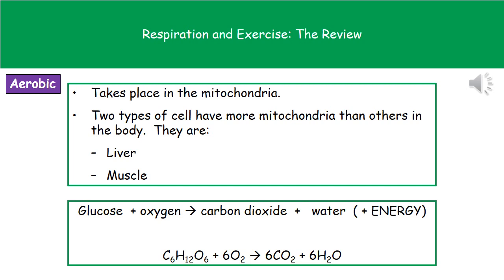Your word equation for aerobic respiration is: glucose plus oxygen makes carbon dioxide plus water. The reason that the plus energy goes into brackets is because energy isn't actually a chemical, so technically we shouldn't include it in the word equation. If you were asked to write the balanced symbol equation, the formula for glucose is C6H12O6, and then you would be adding six oxygens (O2), and that would make six carbon dioxide (CO2) plus six water (H2O). The easy way to remember that is that six is in front of everything except for the glucose.